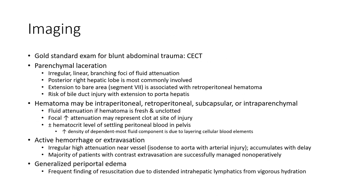Hematoma may be intraperitoneal, retroperitoneal, subcapsular, or intraparenchymal. Graded attenuation if the hematoma is fresh and unclotted. Focal increased attenuation may represent clot at the site of injury. There may be a hematocrit level of layering peritoneal blood in the pelvis, with increased density of dependent cellular blood elements indicating active hemorrhage or extravasation.